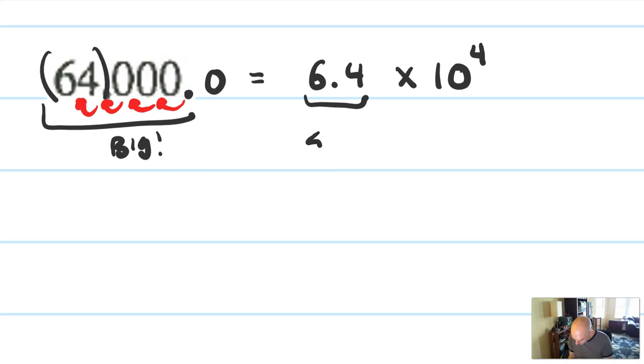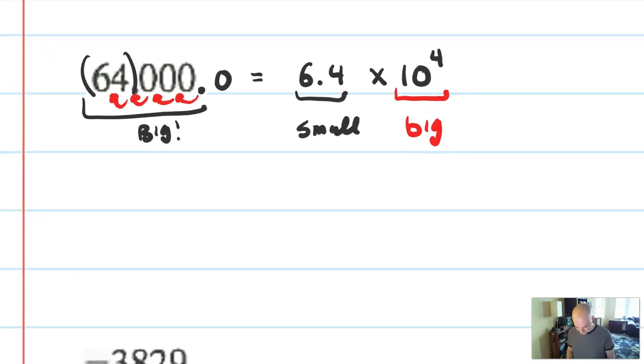6.4 is a small number. So, if my 64,000 is becoming 6.4, I need to balance it out with a large power of 10 to make sure that those are equivalent. So, if the number part gets smaller, the exponent part has to be larger, and vice versa. That also switches around.